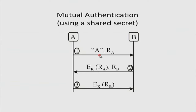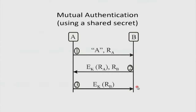Let us go a step further to mutual authentication. First, mutual authentication using a shared secret. As usual, A says 'I am A, here is my challenge R_A to you.' It is assumed both sides share a common secret K. B encrypts R_A with the common key K, then offers his own challenge R_B, asking A to encrypt it as well. She takes R_B, encrypts it with the common key K, and sends it across. When B receives this, he presumably thinks there is A on the other side.